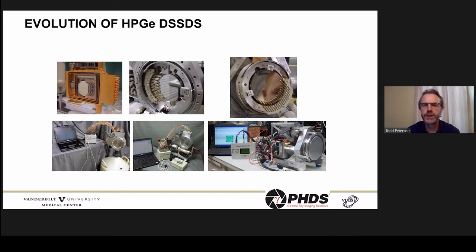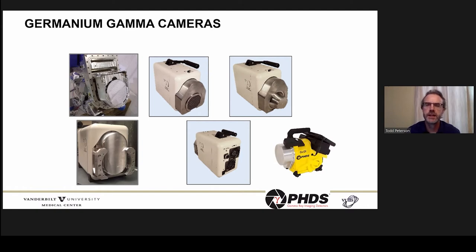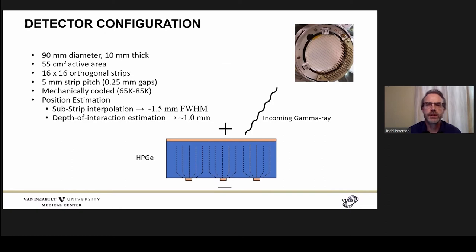Shortly after that, under NIH SBIR funding, a new generation evolved into something that really starts to look like a gamma camera equipped with both parallel hole and pinhole collimators, around 2013. The most recent generation around 2017-2018 includes not only the germanium detector but all of the electronics and mechanical cooling. The standard detectors we've been using are 16 by 16 orthogonal strips with 5 millimeter strip pitch and a quarter millimeter gap between strips, and they are mechanically cooled. Germanium detectors have very good charge collection, allowing quite good spatial resolution even with coarse strip pitch.